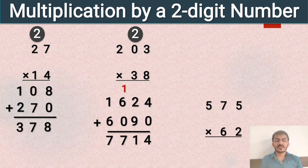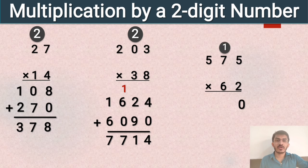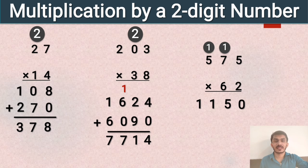Next example is 575 multiplied by 62. We multiply 575 by 2 because 2 is at the ones place. 2 times 5 is 10, 1 is carried forward. 7 twos are 14, plus 1 is 15, carry 1. 5 twos are 10, plus 1 is 11. Now we multiply 575 by the place value of 6, which is 60.